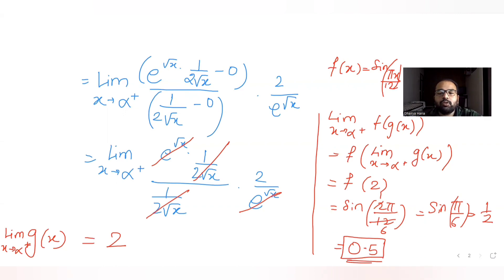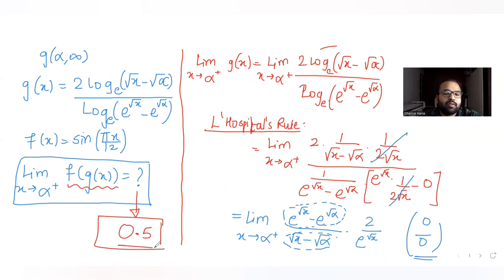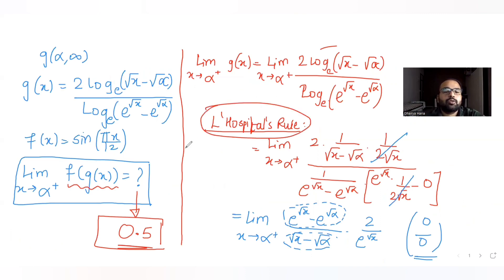sin(π/6) is sin(30°), which equals 1/2 or 0.5. So the answer to the question — the limit as x tends to α of f(g(x)) — is 0.5. I hope you understood how to solve this limits problem using L'Hôpital's rule.